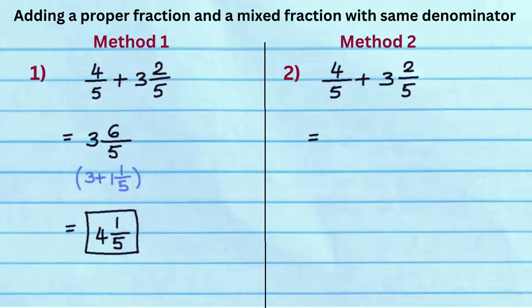In method 2, convert mixed fraction 3 and 2 fifths to improper fraction 17 by 5, and add it to fraction 4 by 5.